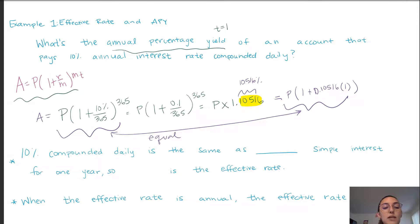What we have concluded is that 10% compounded daily is the same as 10.516% applied using the simple interest formula to the exact same amount. So 10.516% is the effective rate.